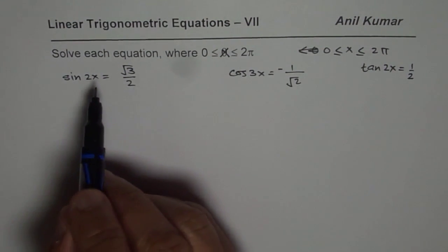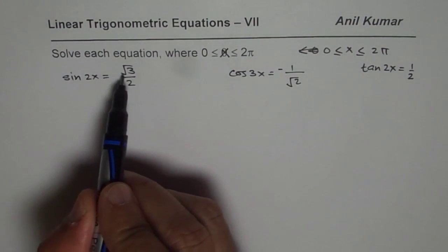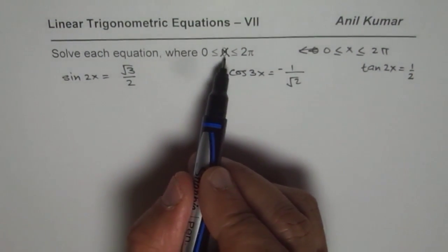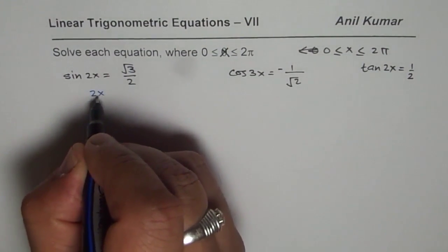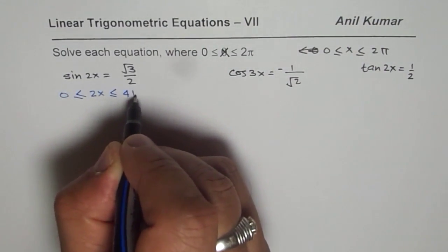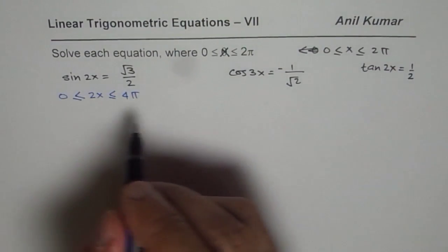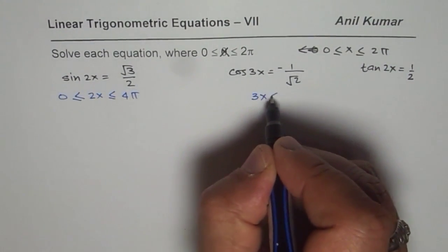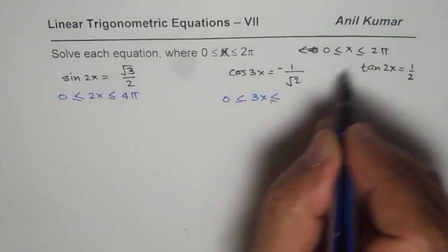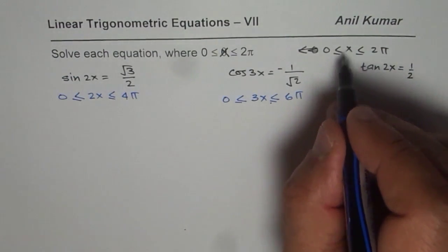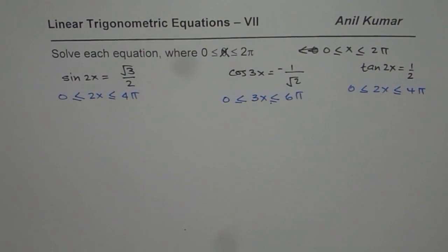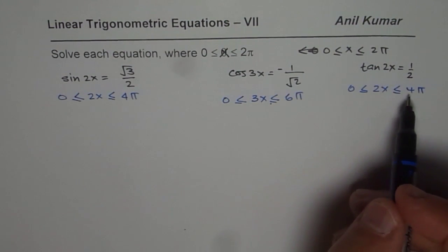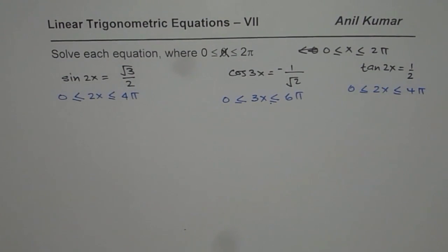The main part here is the domain. For sin(2x), the domain of x is 0 to 2π, so for 2x we multiply by 2 to get 0 to 4π. Similarly for cos(3x), we multiply by 3 to get 0 to 6π, and for tan(2x) we multiply by 2 to get 0 to 4π. That is the first step — modify the domain based on whether you are solving for 2x or 3x.